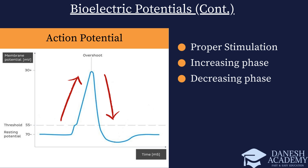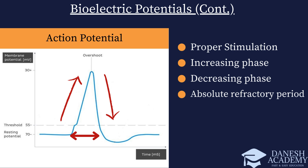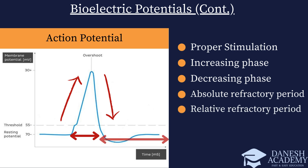The refractory period has two important aspects. First, the absolute refractory period — a brief period immediately following the action potential where the cell is completely unresponsive to any additional stimulation. Then the relative refractory period — a longer period where the cell is less responsive to stimulation but can still be excited under stronger or more prolonged stimuli. The refractory period prevents the cell from firing action potentials too rapidly, allowing it to properly recover and maintain its signaling capabilities.